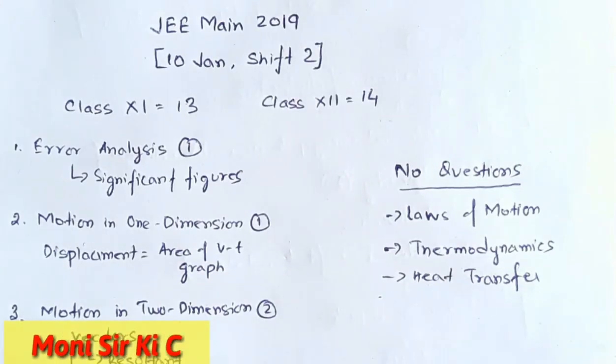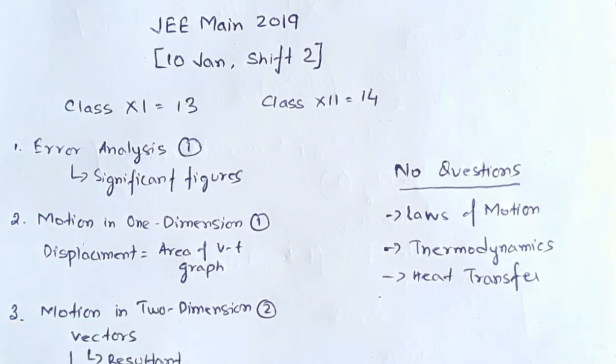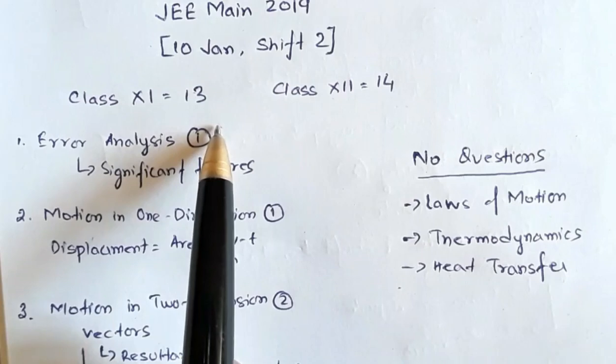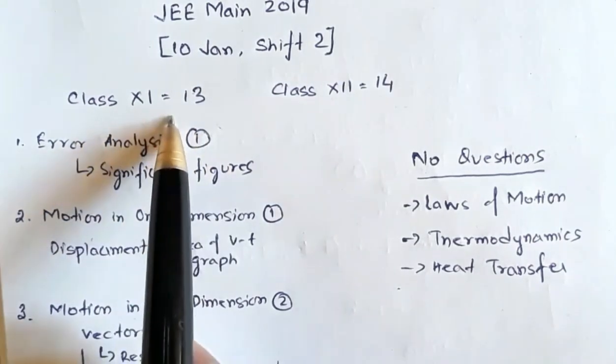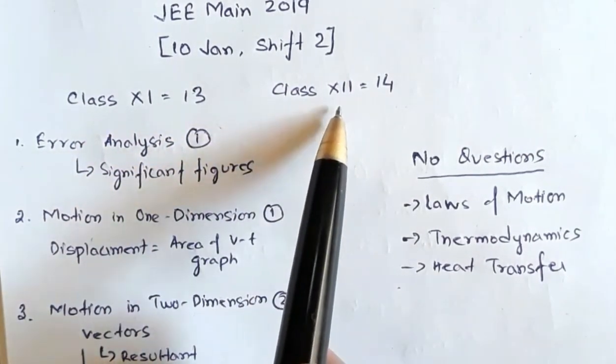Hello everyone, welcome to my channel. In this video I'm going to give an analysis of the JEE Main 2019 paper that was held on 10th of January, shift 2, the afternoon shift. In this paper there were 27 questions: from class 11 there were 13 questions and from class 12 there were 14 questions.